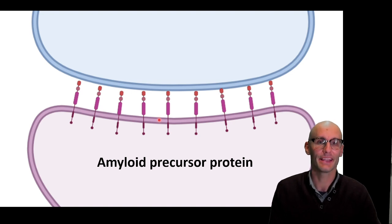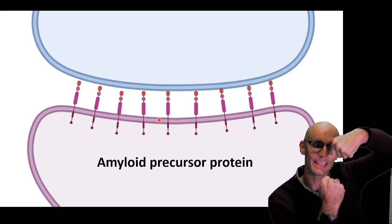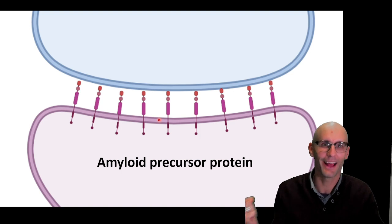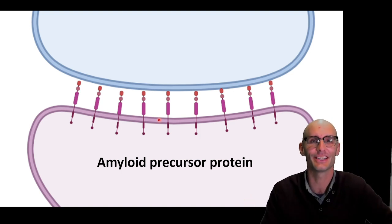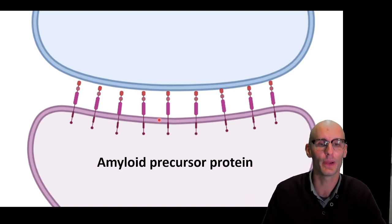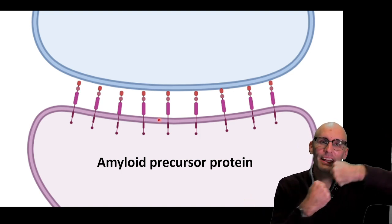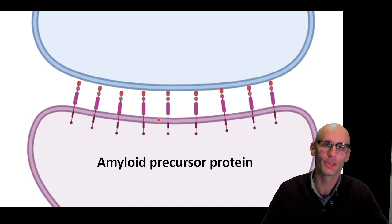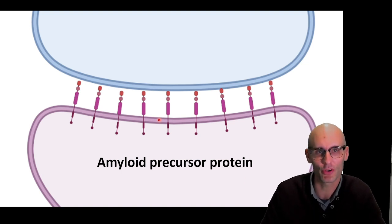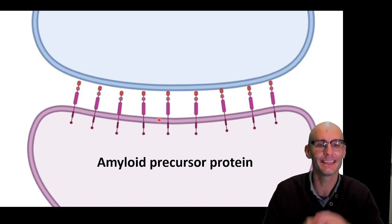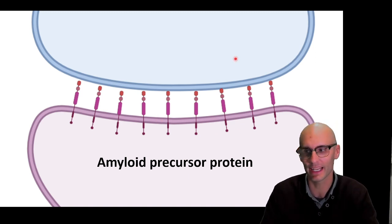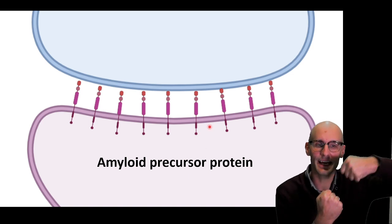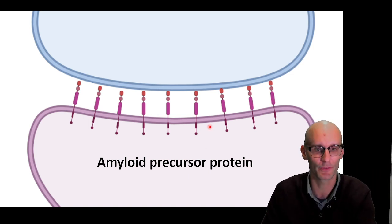Here we have a synapse — this is the connection between two neurons. This is where your thoughts are held, within the connections between your neurons. Now these connections are formed with the help of hundreds of proteins, but one of those proteins that helps synapse formation is the amyloid precursor protein. It's a transmembrane protein like this, and it sticks out into the synapse to help the synapse form.